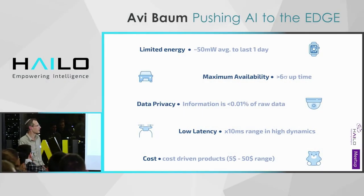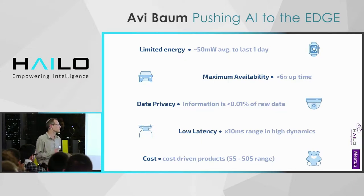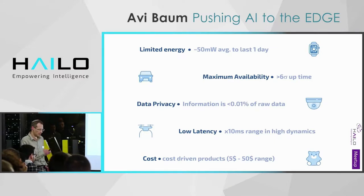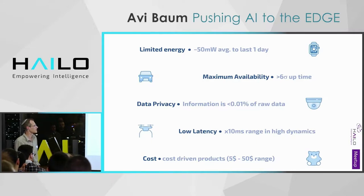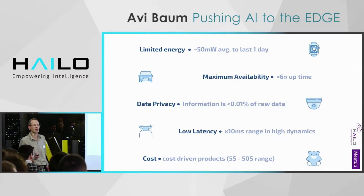Maximum availability — if it's a car, you don't want it to rely on anything connected online. There is a demand for design for Six Sigma, so it needs to be highly reliable. It's not easy to obtain this reliability without giving the compute power to the device itself and making it self-contained — let alone missiles and other systems that need to handle their mission autonomously. Data privacy is a growing demand in light of GDPR and other regulations.